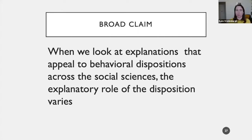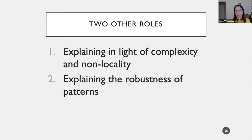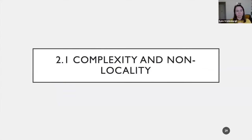The broad claim of this section: when we look at explanations that appeal to behavioral dispositions across the social sciences, the explanatory role of the disposition varies. By 'explanatory role' I mean at least: the reasons why a behavioral disposition is used to explain, its relation to a general psychology of that disposition, and the interpretation of the disposition itself. Two other roles I want to discuss: first, explaining in light of complexity and non-locality; and second, explaining the robustness of patterns.